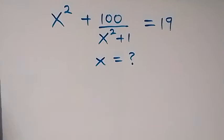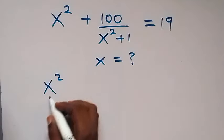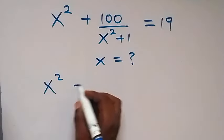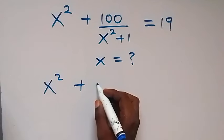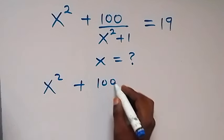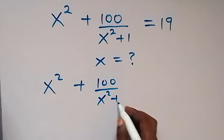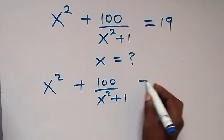Hello, you are welcome. How to solve this nice math problem: x squared plus 100 over x squared plus 1 equals 19.